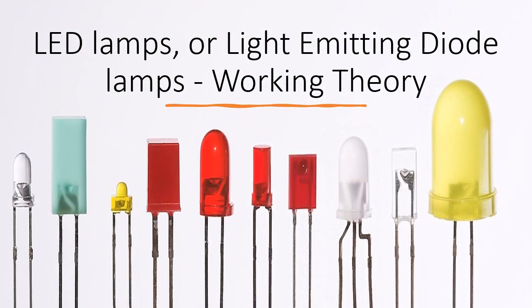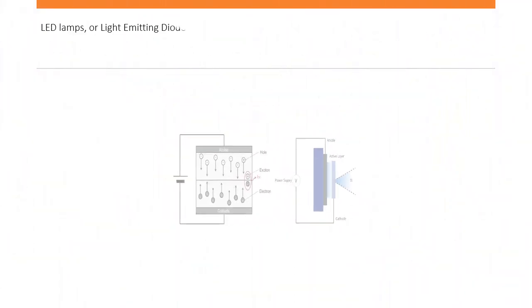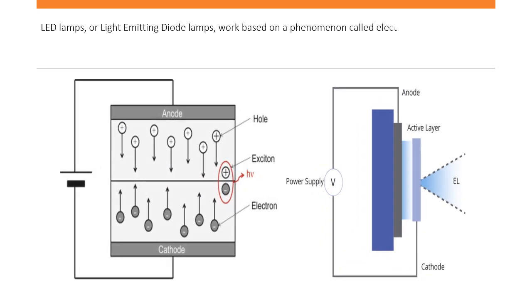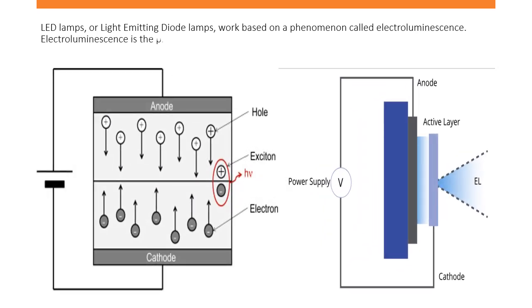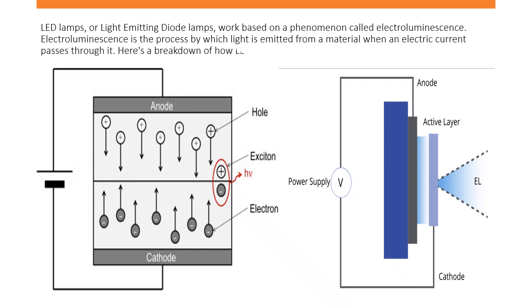LED lamps, or light emitting diode lamps, working theory. LED lamps work based on a phenomenon called electroluminescence. Electroluminescence is the process by which light is emitted from a material when an electric current passes through it. Here is a breakdown of how LED lamps work.